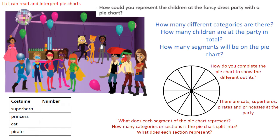So our first problem of today: how can you represent the children at the fancy dress party with a pie chart? The first thing I want to know is how many different types of fancy dress are there? If we have a look at the picture, we can see that we have one princess. I'm going to make a tally as I go along. I've got three cats at the back, three pirates, and five different superheroes. So how many children are there at the party? Well, there are 12 children and there are four different categories.